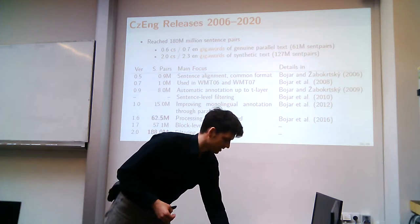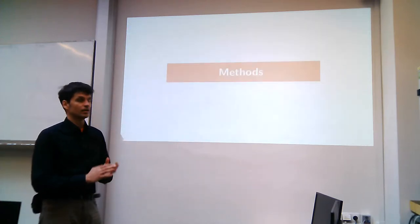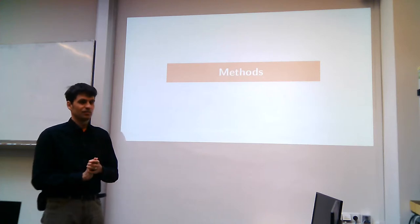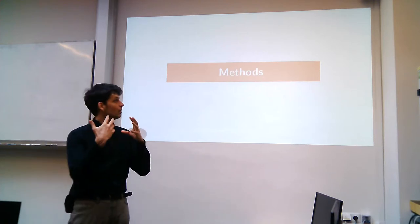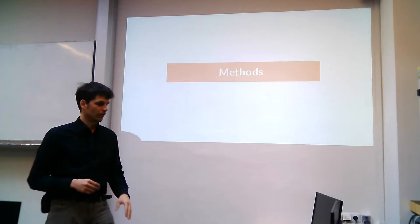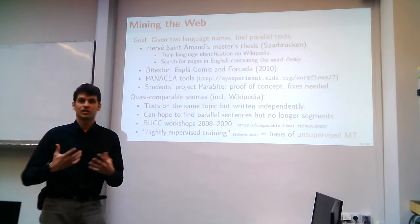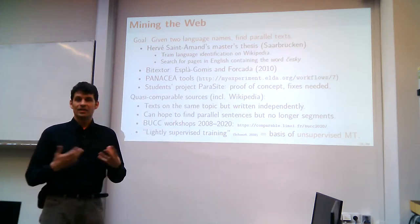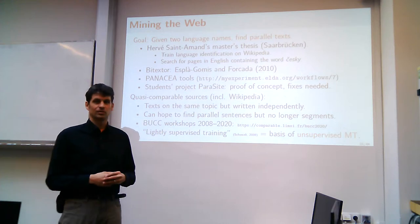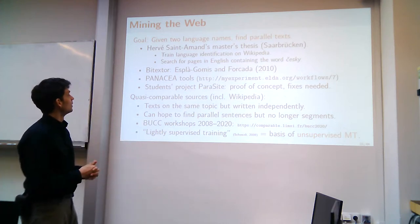That's the history of CzEng. Now let's briefly review all the methods needed if you want to end up with a corpus that is automatically sentence- and word-level aligned. We first need to get texts from somewhere, and the web is an ideal source. People have been trying to mine the web for many years already.